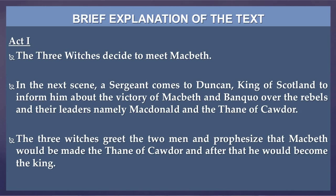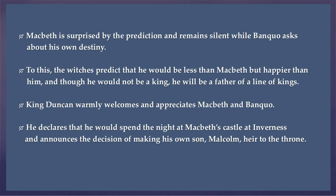Coming to the text, here I shall provide you with a brief explanation of the text itself. Starting with Act 1, the three witches decide to meet Macbeth. In the next scene, a sergeant comes to Duncan, king of Scotland, to inform him about the victory of Macbeth and Banquo over the rebels and their leaders, namely Macdonald and the Thane of Cawdor. The three witches greet the two men and prophesy that Macbeth would be made the Thane of Cawdor and after that he would become the king. Macbeth is surprised by the prediction and remains silent while Banquo asks about his own destiny. The witches predict that he would be less than Macbeth but happier than him, and though he would not be a king, he would be a father of a line of kings. Duncan declares that he would spend the night at Macbeth's castle of Inverness and announces the decision of making his own son, Malcolm, the heir to the throne.